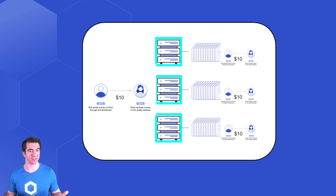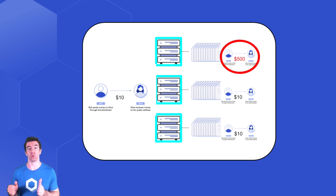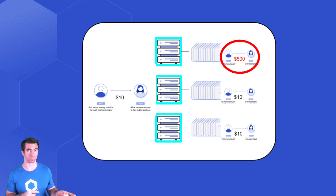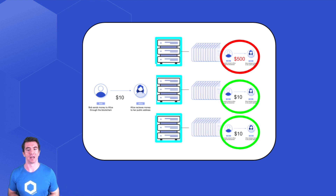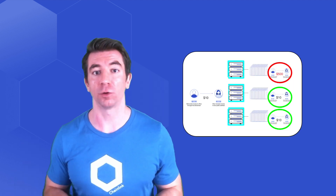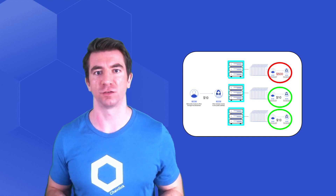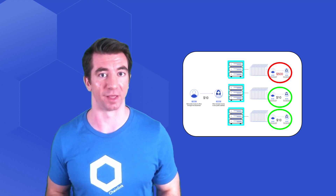If one node were to try to change something, their blockchain node would no longer match what the rest of the nodes were saying, and essentially get kicked out and be rejected. Their copy of the blockchain would now be invalid. Majority rules when it comes to the blockchain.